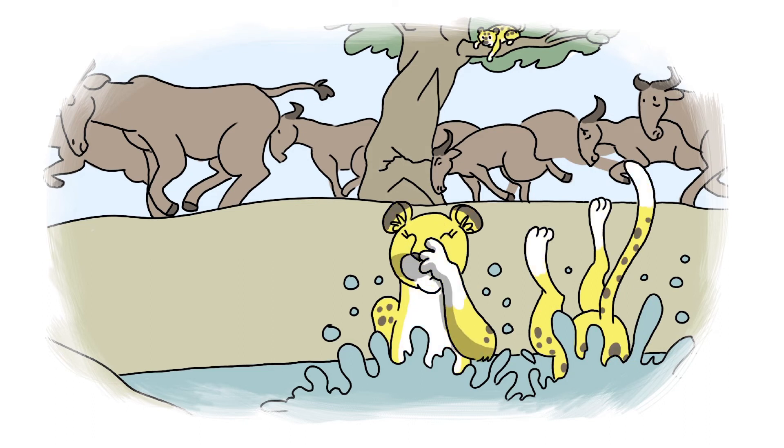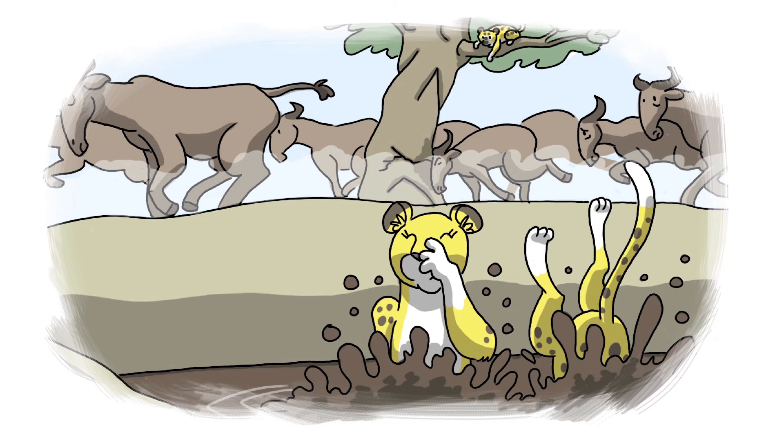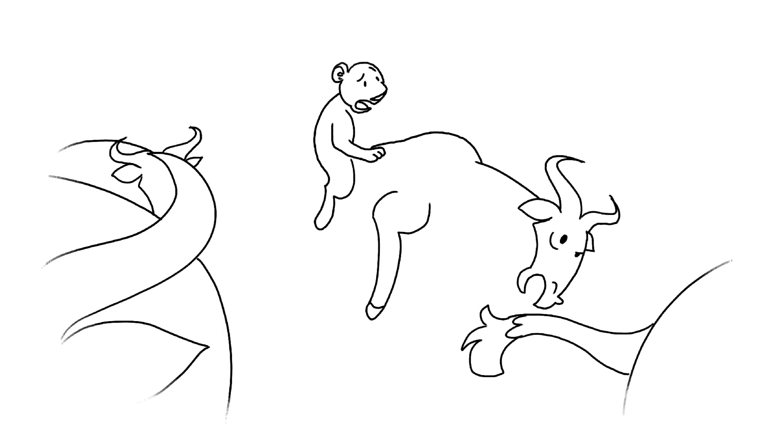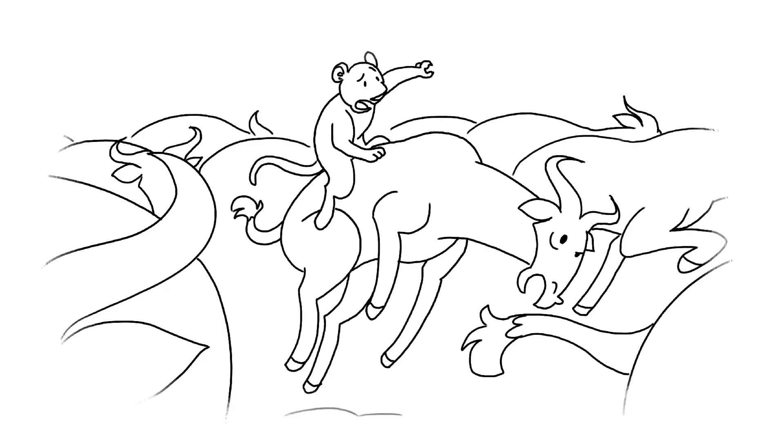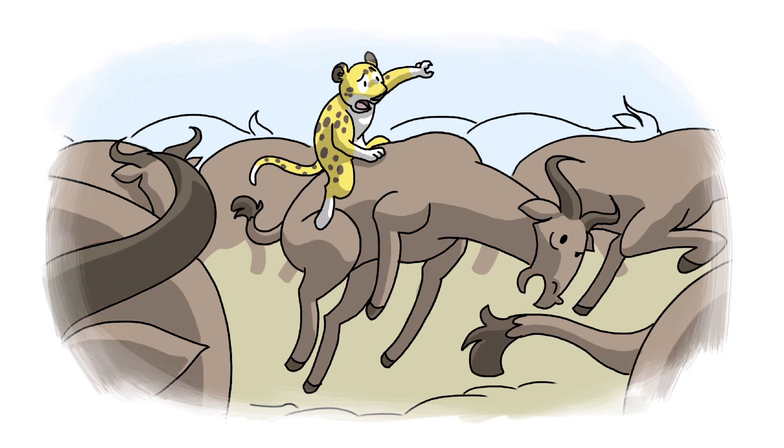The wildebeest bashed into the tree repeatedly until it splintered and fell. Cheetah tumbled down and landed on the back of one of the wildebeest, which leapt and bounded, trying to knock him off. It was like one of the rodeos he had read about where cowboys rode on bucking horses. But it wasn't nearly as fun as he had imagined. It was loud and painful and scary.